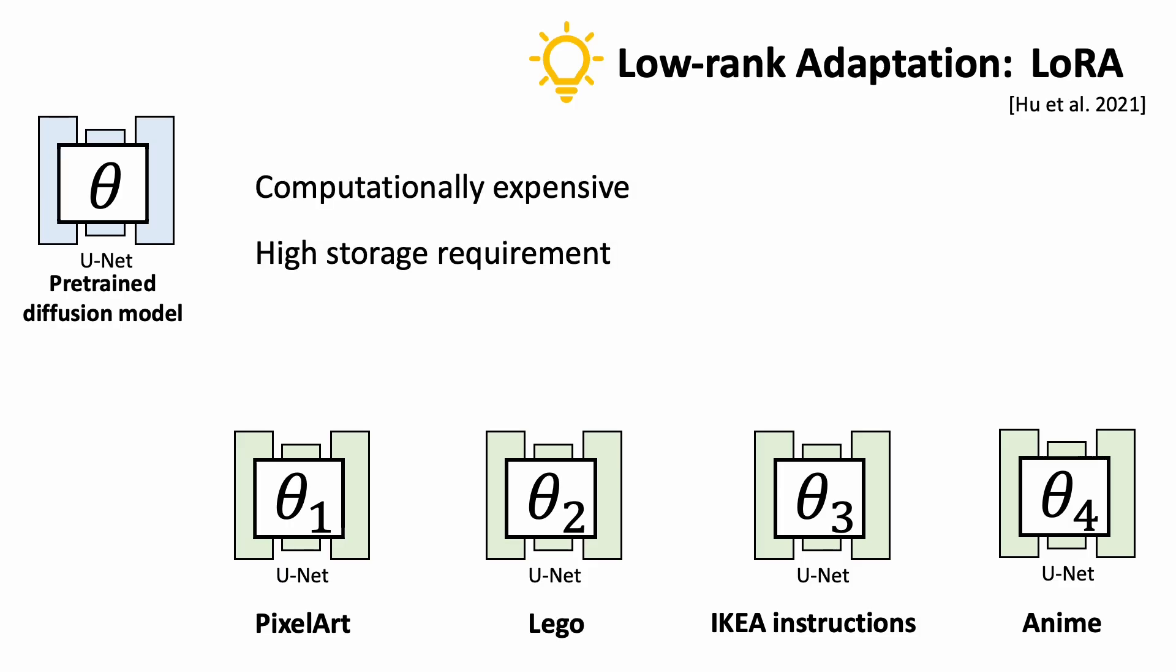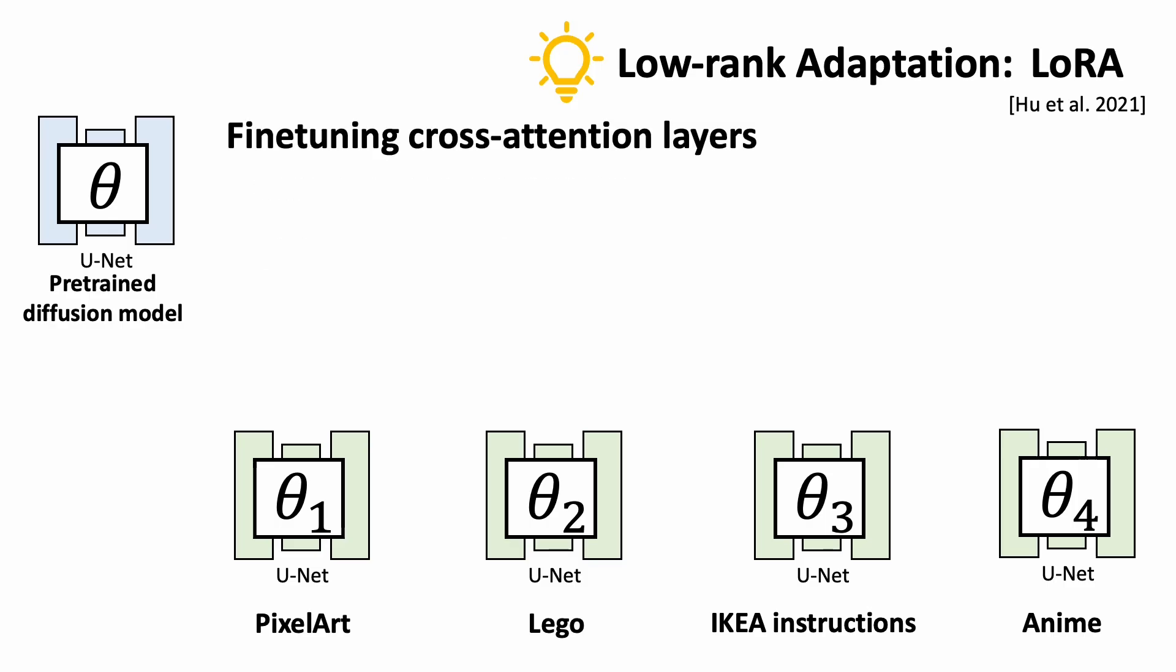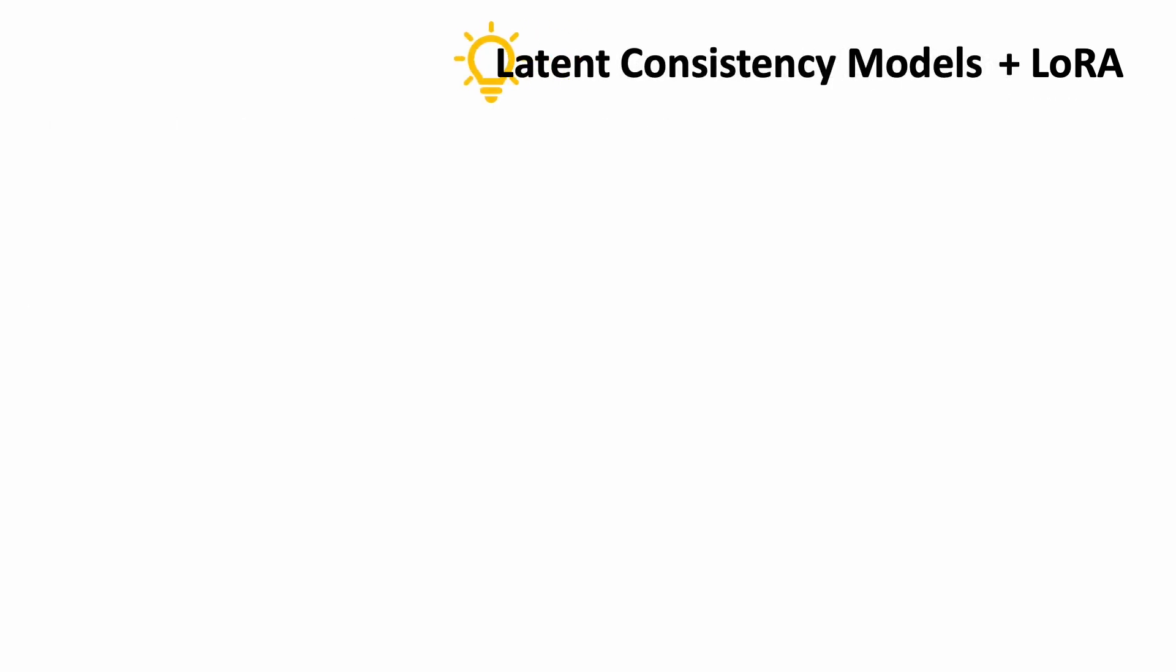In many cases, it turns out we only need to fine-tune the cross-attention layers in the denoising network. We freeze the pre-trained weight W0 and optimize the residual parameters. But there are still a lot of parameters to update. We can reduce the number of parameters using low-rank approximation on the weight matrix. Therefore, we can accelerate the consistency distillation with LoRA.